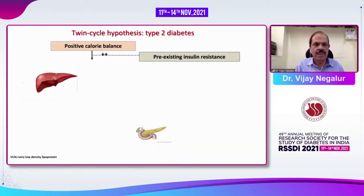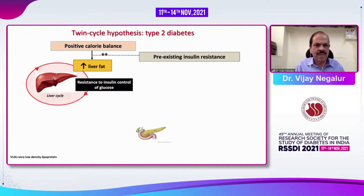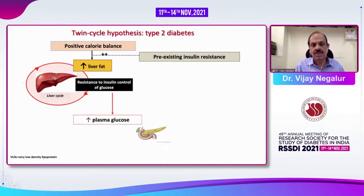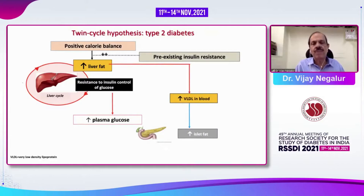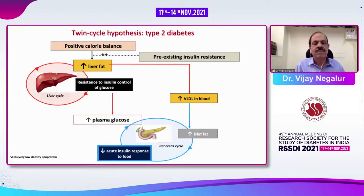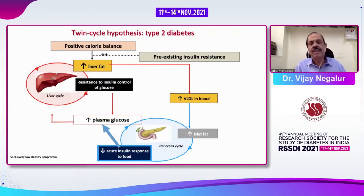Roy Taylor's famous twin cycle hypothesis says that excess calorie balance leads to the liver getting saturated with excess fat, developing insulin resistance. This makes the pancreas secrete more insulin, raising plasma insulin levels. VLDL also enters the beta cells of the pancreas causing islet fat accumulation — lipotoxicity — which brings about decreased insulin secretion response, again elevating plasma glucose. So there's a twin-hit working at both the liver and the pancreas, ultimately resulting in type 2 diabetes.